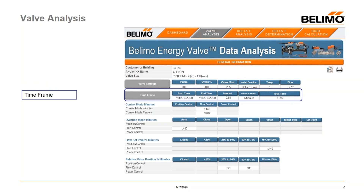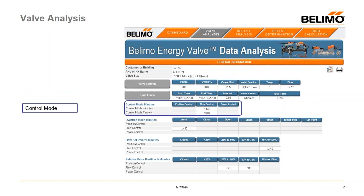The time frame box reminds you what you selected on the dashboard screen. For instance, if you imported 31 days of data but then selected down to one day, all calculations throughout the tool will reflect one day. The control mode box tells you how many minutes by mode the valve is operating — in this scenario the valve was in flow control for 1,440 minutes, which is 100% of the time.